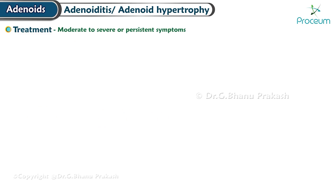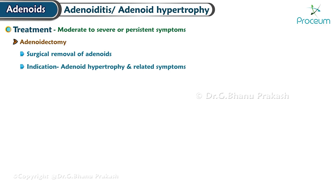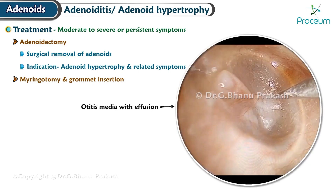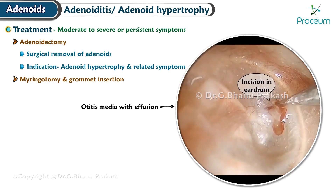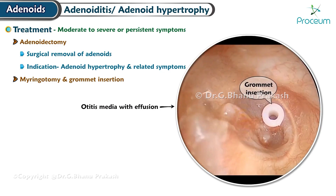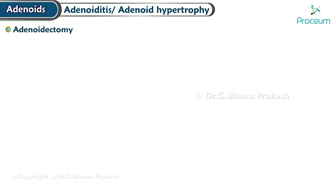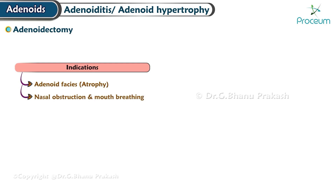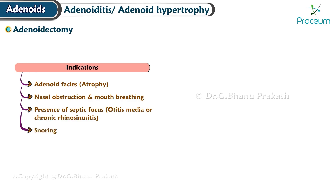For moderate to severe or persistent symptoms, the following interventions may be considered. Adenoidectomy — surgical removal of the adenoids — is often recommended in cases of significant adenoid hypertrophy and related symptoms. Myringotomy and grommet insertion: in situations where otitis media with effusion (fluid build-up in the middle ear) is present, additional procedures such as myringotomy (incision in the eardrum) and grommet insertion (placement of small tubes in the eardrums) may be necessary. Indications for adenoidectomy include adenoid facies, nasal obstruction and mouth breathing caused by enlarged adenoids, presence of a septic focus such as otitis media or chronic rhinosinusitis, and snoring related to adenoid hypertrophy.